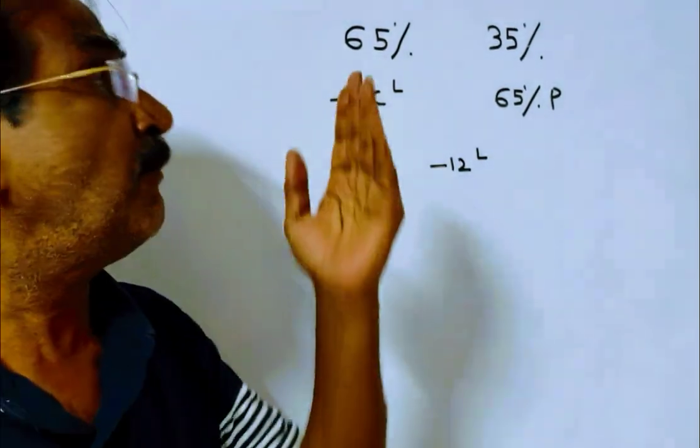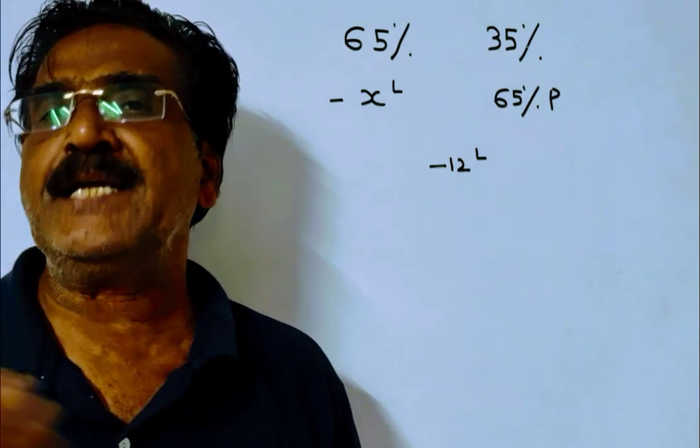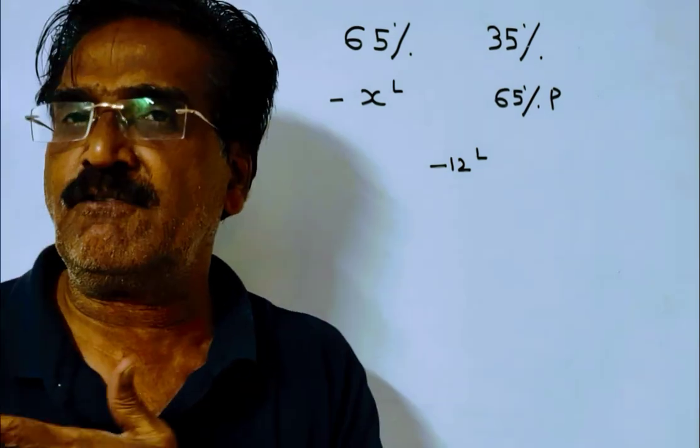This problem can be solved by applying the rule of allegation. By applying the rule of allegation, we get the quantities ratio.